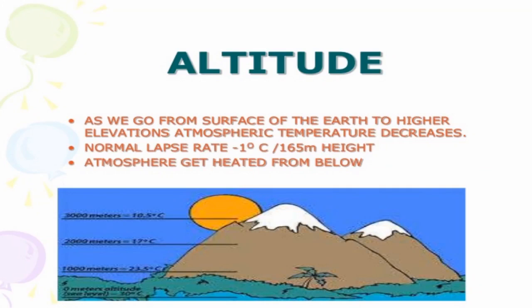Temperature drops after every 1000 feet. For example, Murree is located above sea level, which is why its temperature is colder than Gujranwala. Similarly, you can compare Lahore with Nathia Gali — Lahore's temperature is around 7 to 10 degrees Celsius, but in Nathia Gali it is around minus one or minus two degrees Celsius.